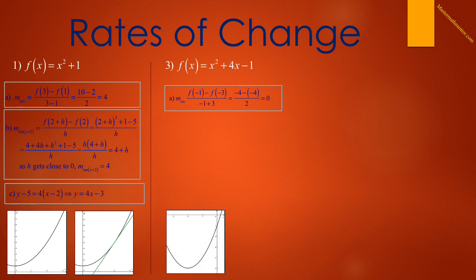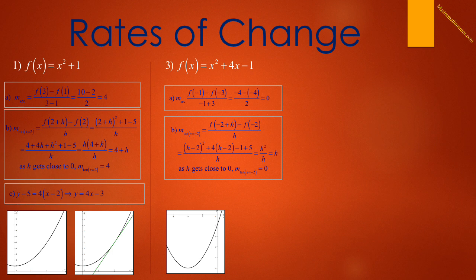Example 3a uses f of x equals x squared plus 4x minus 1. To find the slope of the secant line between x equals negative 1 and x equals negative 3, we look at f(−1) minus f(−3) over negative 1 minus negative 3, which is negative 1 plus 3. We get negative 4 minus negative 4 all over 2, and the slope of our secant line is equal to 0. To find the slope of the tangent line at x equals negative 2, we look at f(−2 + h) minus f(−2) all over h. When all the expansion is done, we get h squared over h, which equals h. So the slope of the tangent line as h gets close to 0 is equal to 0.